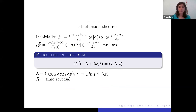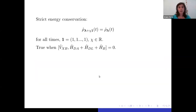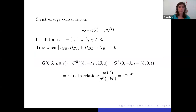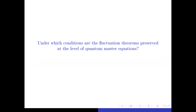Using that condition, we can derive a fluctuation theorem in terms of symmetries of the generating function: the reversed generating function is related to the forward one, with the symmetry condition that for the bath you shift the counting fields with the inverse temperatures, while for the work source no shift is required. Furthermore, by imposing strict energy conservation — expressible in terms of symmetries of this object — combined with the previous fluctuation theorem, we can derive a Crooks relation for this specific coherent drive.